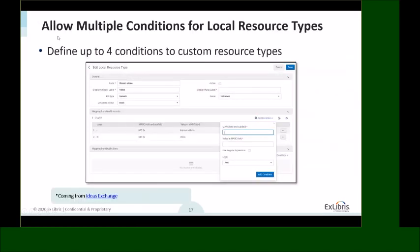Allow multiple conditions for local resource types: from the idea exchange, we received a request for more flexibility to define a custom resource type — the ability to determine a resource type using a combination of several MARC fields. We added the option to define up to four conditions using a combination of fields and subfields, with AND/OR logic, to define a custom resource type.